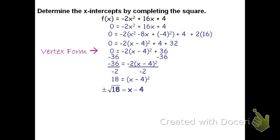Again, remember, when you square root a square, two answers, plus or minus. We'll move the 4 next to get x by itself and isolate the variable. If we add 4 to both sides, we get x = 4 ± √18.